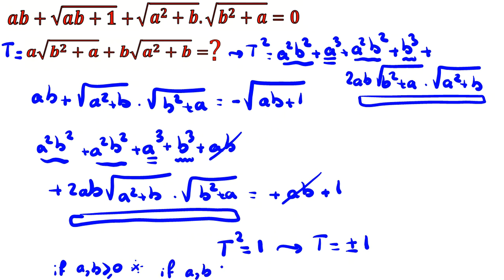If a and b are both negative (less than or equal to zero), their product ab is at least zero, and since we are taking square roots the domain requires each term to be at least zero. So again we reach a contradiction because the sum is at least one while the other side is zero.